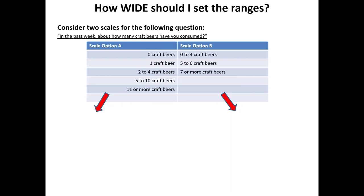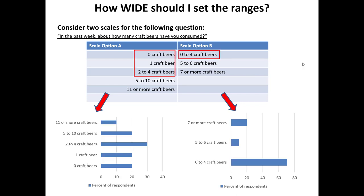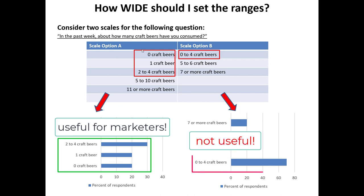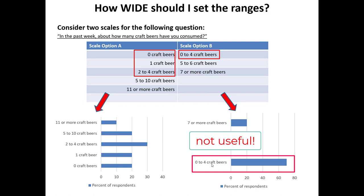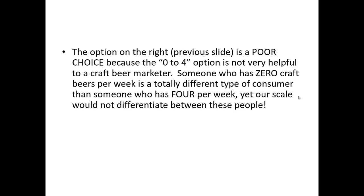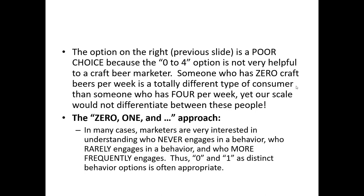Next, how wide should you set the ranges? For craft beer marketers, there's a big difference between understanding a consumer who drinks zero craft beers, one who drinks merely one per week, or one who drinks two to four. Therefore, we need intense precision at the low end of usage, making the option with finer granularity at the bottom far superior. As a general rule of thumb when measuring frequency of behavior: marketers are very interested in knowing who does something zero times, who does it just one time, and who does it two or more times — with other cutoff points judged as appropriate for the particular marketing research context.